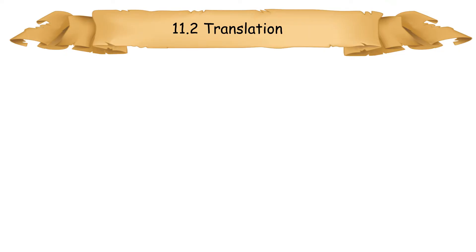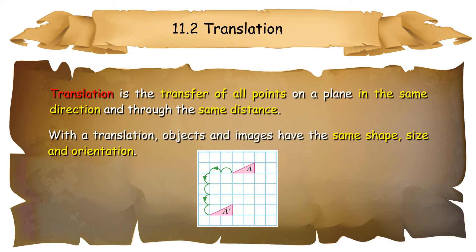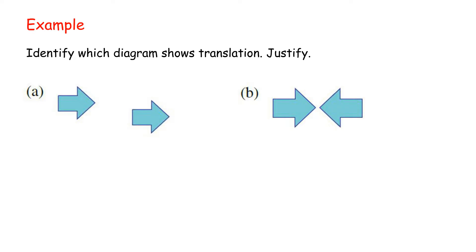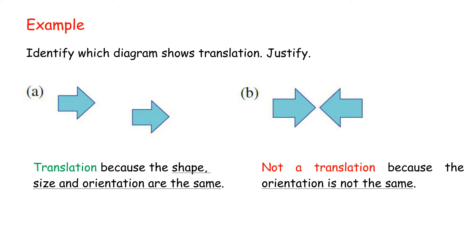11.2 Translation. Translation is the transfer of all points on a plane in the same direction and through the same distance. With a translation, objects and images have the same shape, size, and orientation. Example: Identify which diagram shows translation. A. Translation, because the shape, size, and orientation are the same. B. Not a translation, because the orientation is not the same.